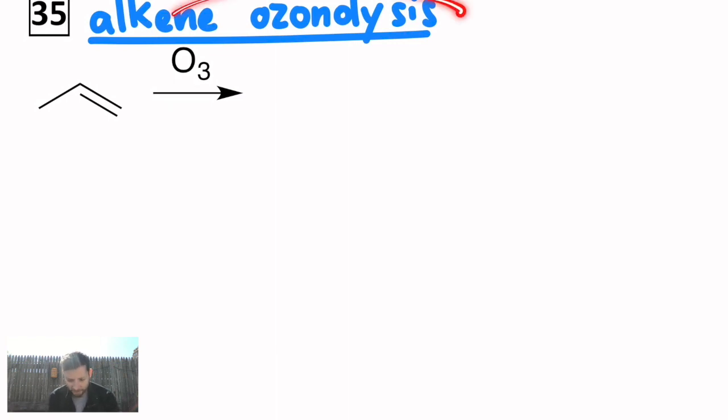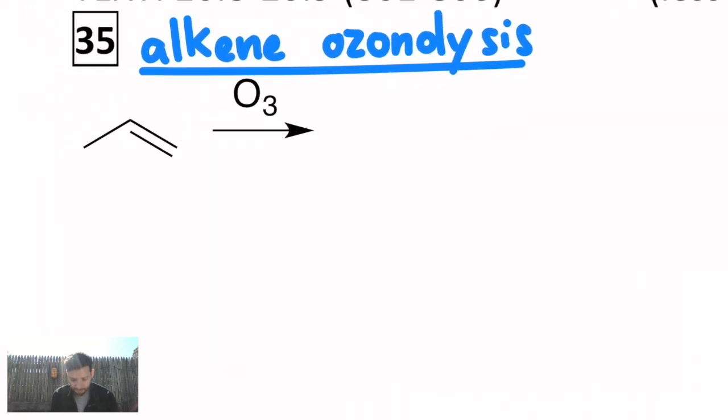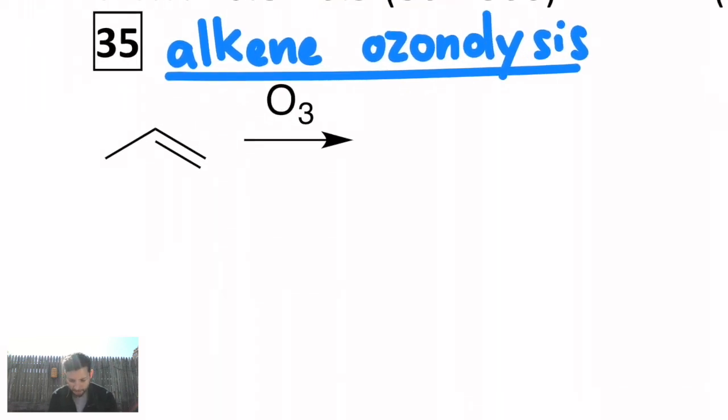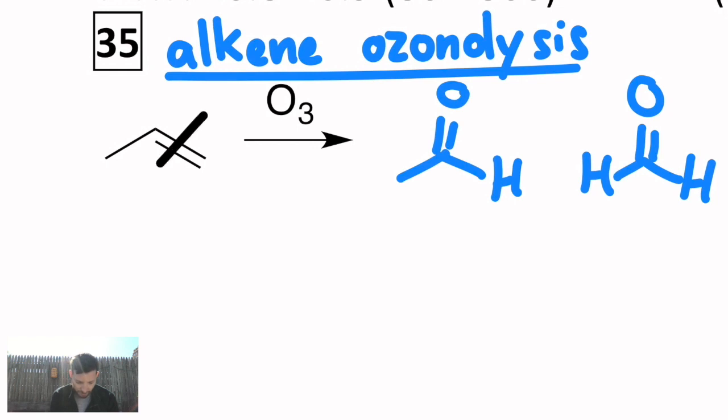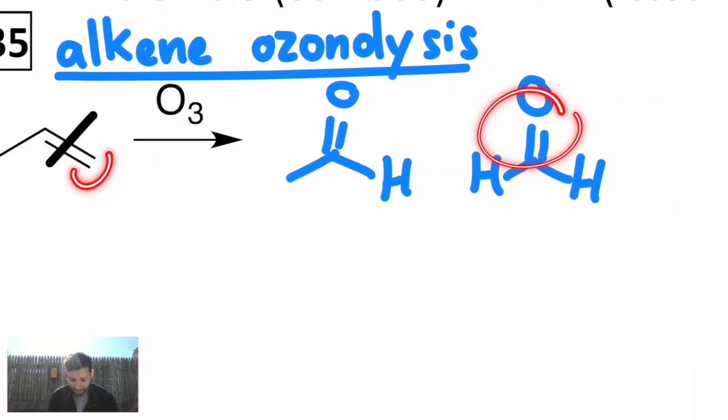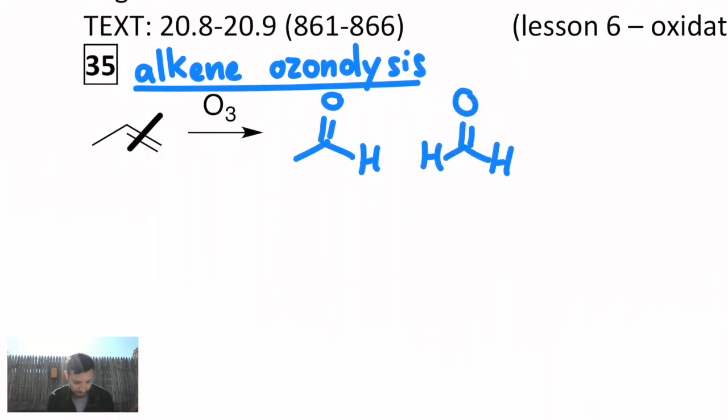We're going to start with ozonolysis, which is a way of taking an alkene and turning it into carbonyl compounds. So if I take just propene, treat it with ozone, you will get an equivalent of acetaldehyde and formaldehyde. And it looks as if we sliced right through that carbon-carbon bond. So we got a two carbon aldehyde and a one carbon aldehyde. What you see is what you get. So we have in this case aldehydes.